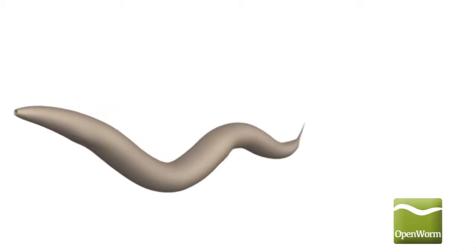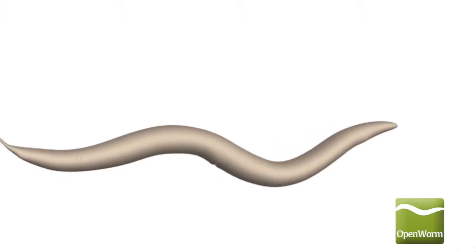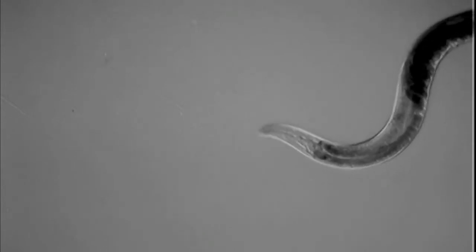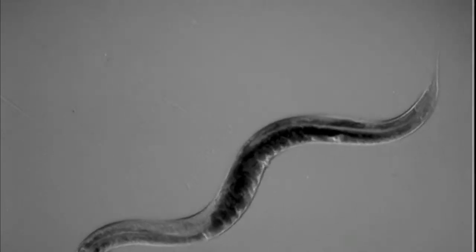C. elegans is a microscopic roundworm, also known as a nematode, that is 1 mm long. These nematodes are usually found in temperate soil environments worldwide. In the wild, they feed on the bacteria that help decay decomposing plant matter.